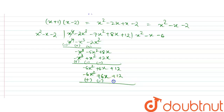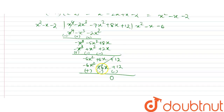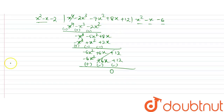After subtracting, all values cancel and the remainder is zero. Therefore x⁴ minus 2x³ minus 7x² plus 8x plus 12 equals (x² minus x minus 2) multiplied by (x² minus x minus 6).